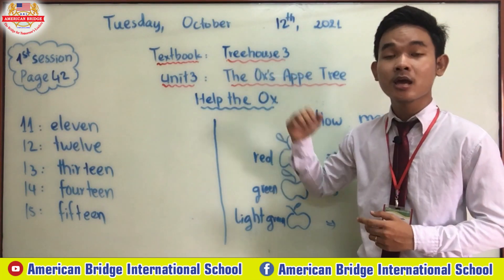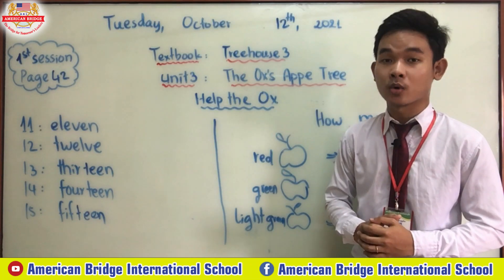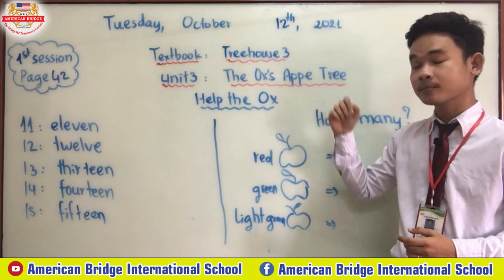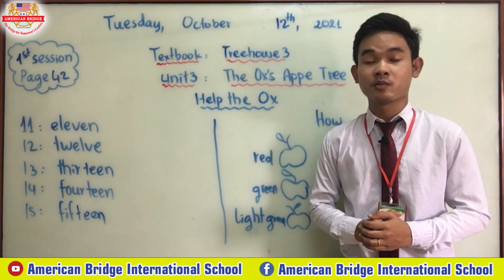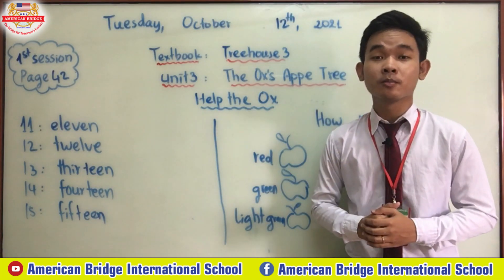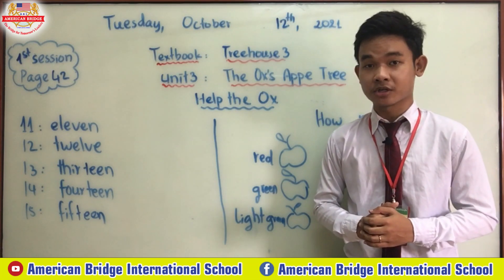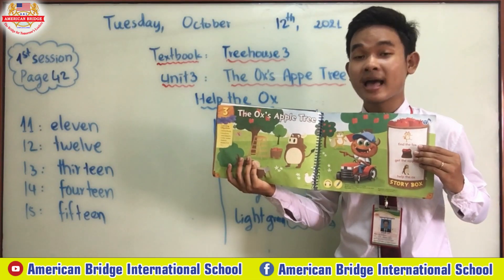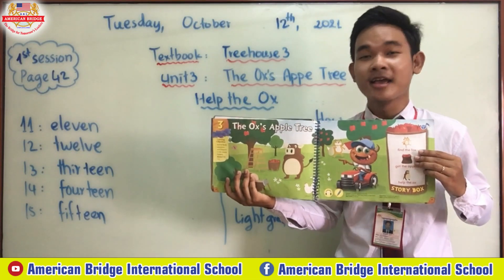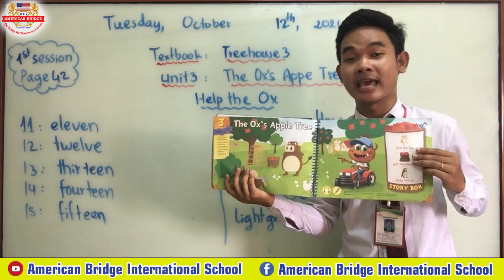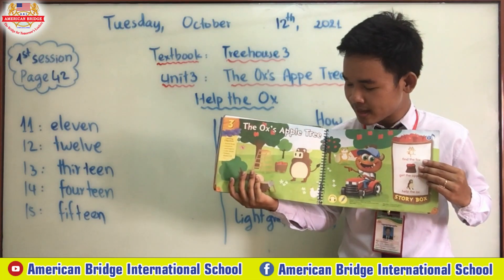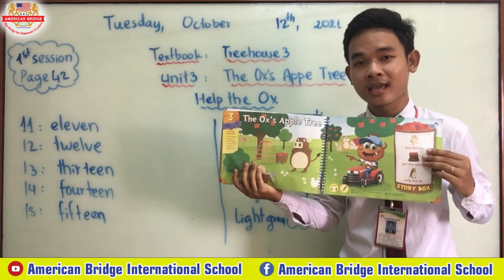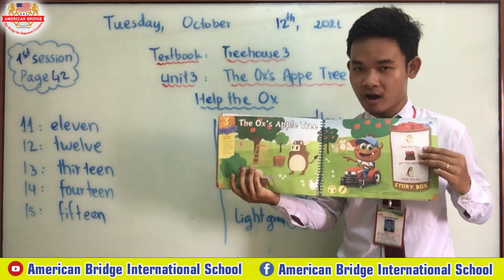Today we will continue to study Unit 3: The Ox's Apple Tree. Before we continue, let's open your book and review. So what's happening here? Someone cut down the apple tree and it makes the ox sad. Who cut down the apple tree? Yes, the fox.